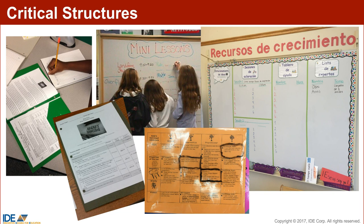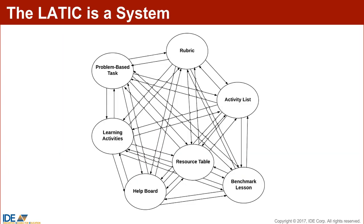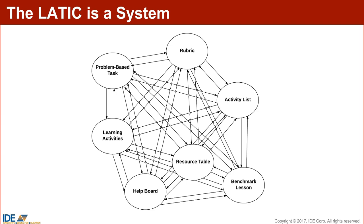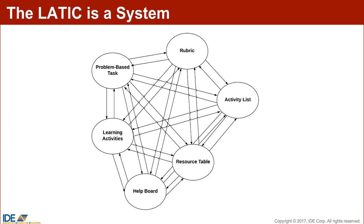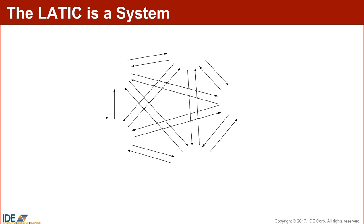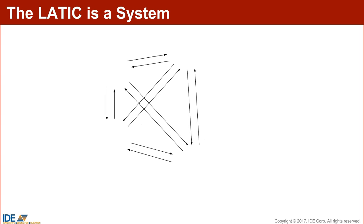The structures and strategies create a system of interdependent components. When implemented with fidelity, they create a strong network to support student achievement. But if you pick and choose which structures and strategies you like and start to drop one here and there, you weaken the system.